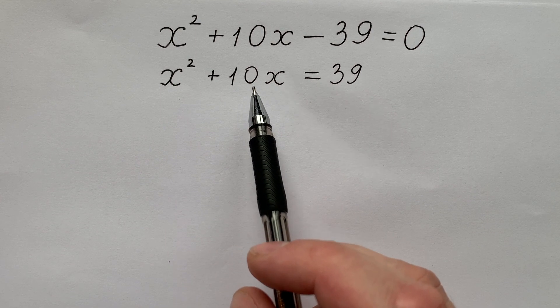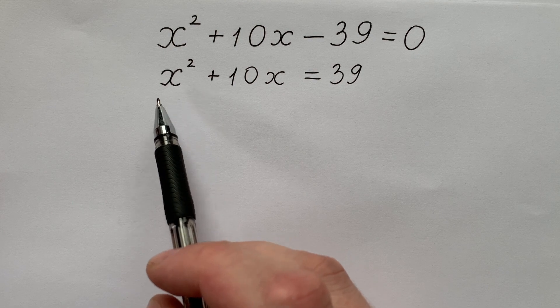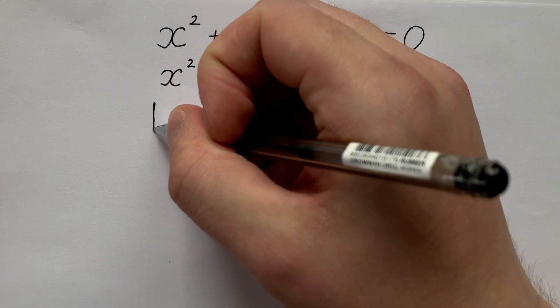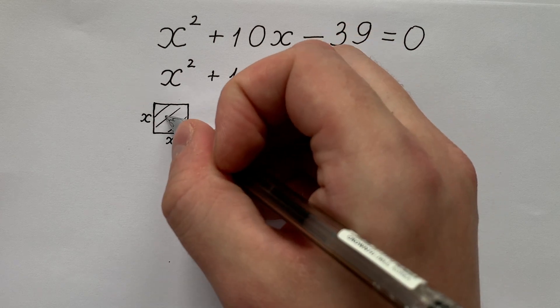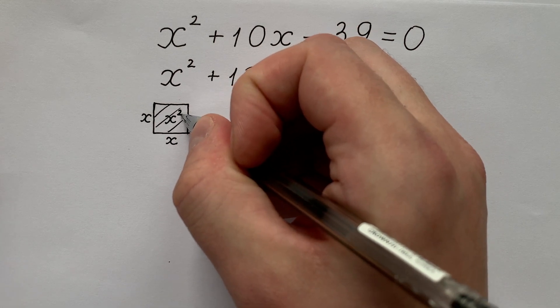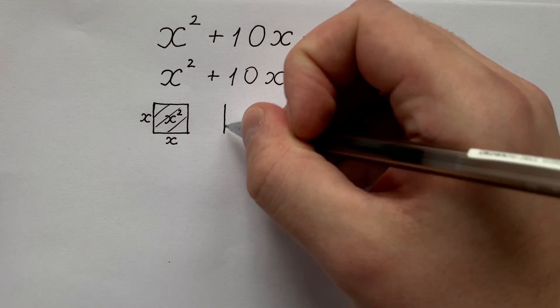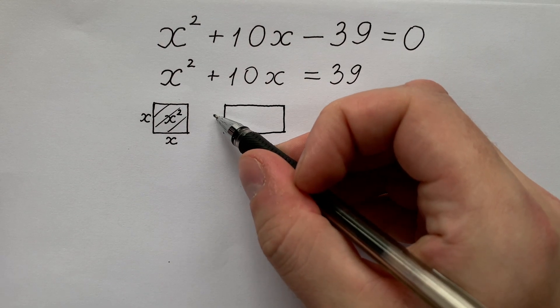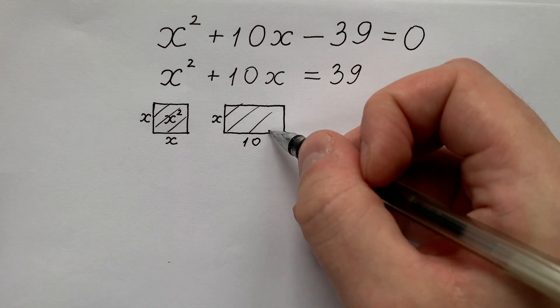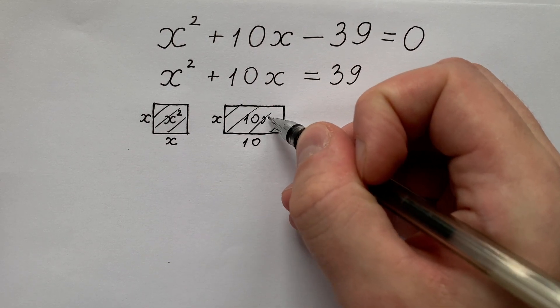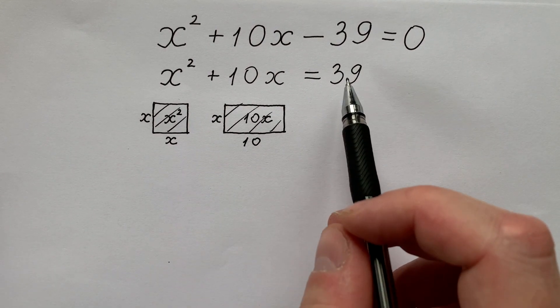These two terms are two parts of a storage. The first one has a quadratic form and it looks like x and x with an area x squared. And the second one is a rectangle with sides x and 10 having area 10 times x of course. And the sum of these two areas gives us 39.